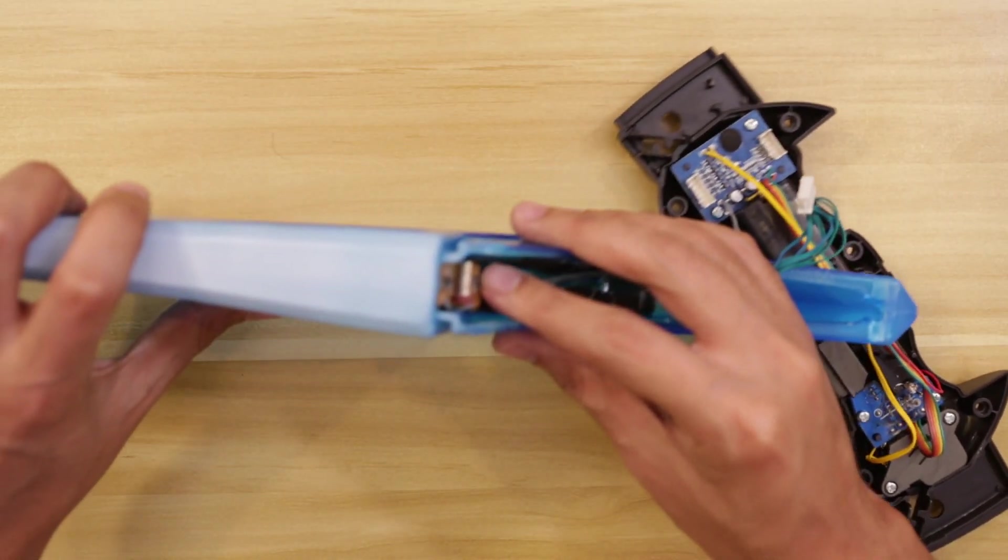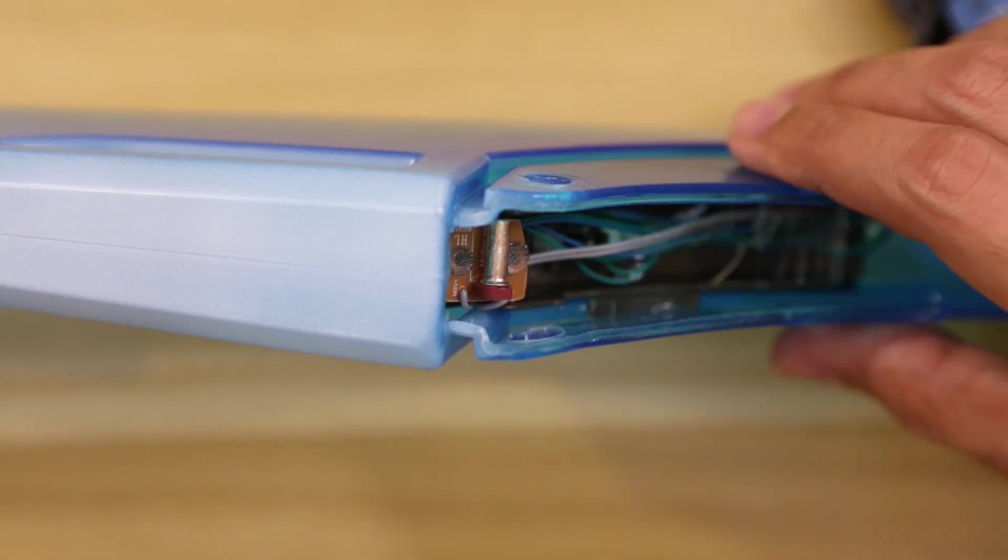On one of the blades, I found a tilt switch. This is used to trigger the LEDs and sound effects when it's swung around.